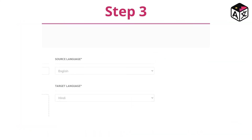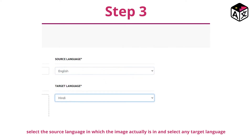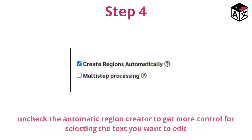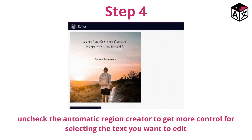Step 3: Once an image is uploaded — because Image Translate is a translation tool but here we're going to use it as a graphic tool — select the source language, which is essentially the language the image is in, and a target language, which can be anything you want. Step 4: You can uncheck the automatic region creator to get more control for selecting the text you want to edit. Just make sure you click and drag to select the text you want to edit.